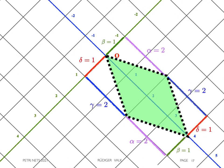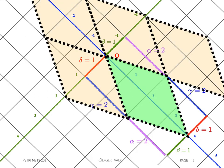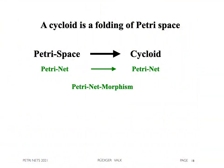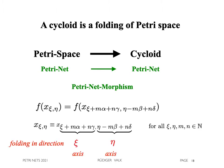From the definition of the cycloid, we knew that all neighboring parallelograms of the same shape are folded together. This is formally done by a net folding from the Petri space to the cycloid. It has the property to merge equivalent elements. The corresponding equivalence relation is composed by a folding in the direction of the xi-axis and the eta-axis.